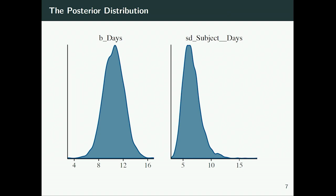One advantage of Bayesian statistics is really that it's far more informative than the output of frequentist algorithms. It comes with the disadvantage that it's more complicated to fit and takes longer — but if you gather data once a year, you can wait two days for a large dataset to fit. I had one student doing both frequentist and Bayesian analyses, and when new data came in she just did the frequentist analysis. When I asked why, she said the Bayesian stuff took too long. I asked how long — she said one minute. People are just used to things being so fast.